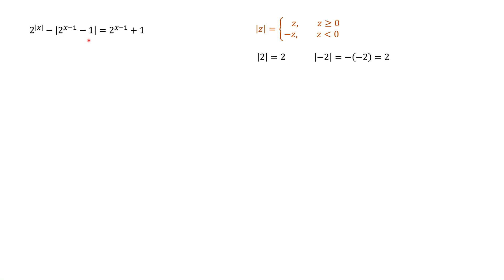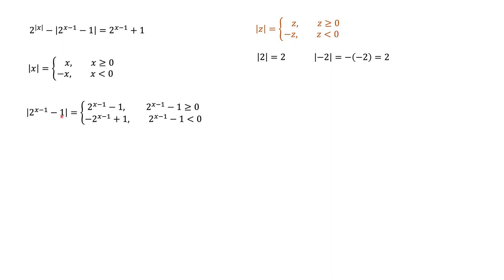Now let's apply the absolute value definition to the two terms in our equation. For |x|, we simply replace z with x: it equals x when x ≥ 0, or minus x when x < 0. For |2^(x−1) − 1|, we take z as 2^(x−1) − 1 and apply the same formula — it equals that expression when it's non-negative, or its negative when it's less than zero.